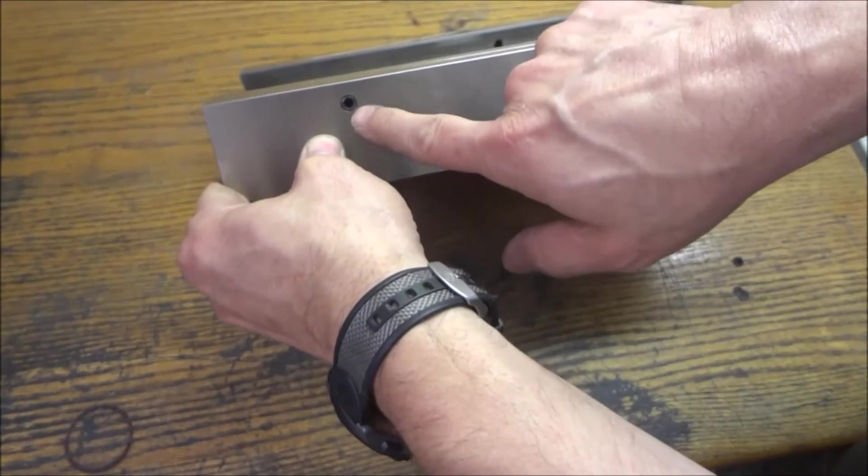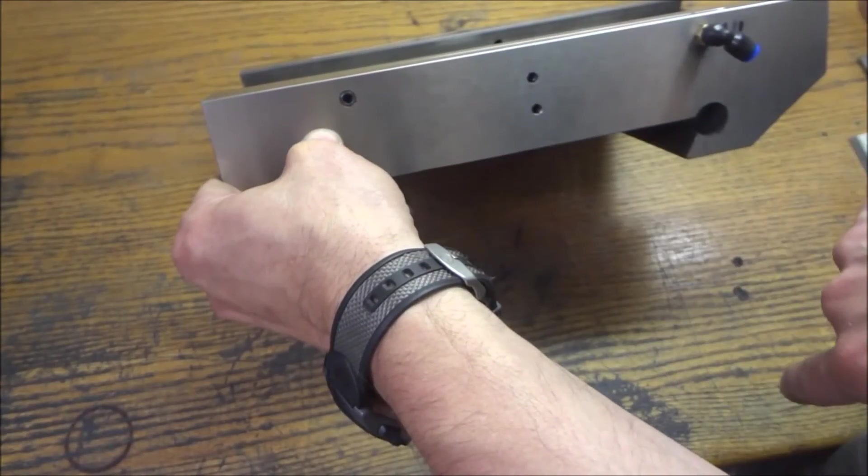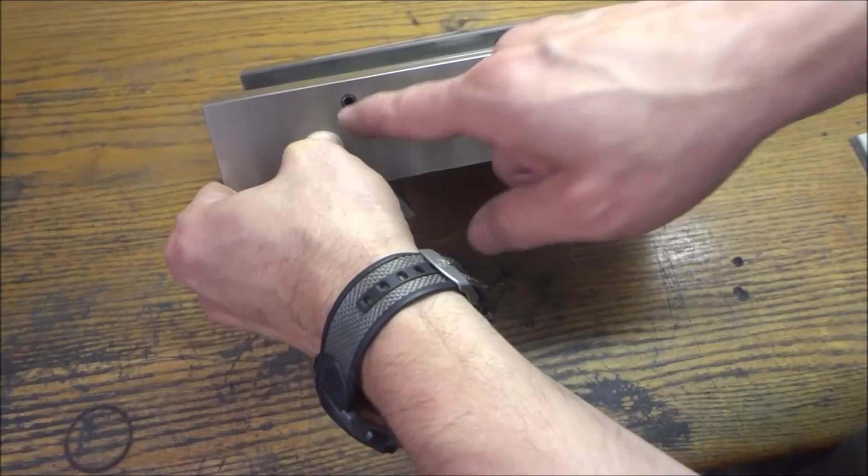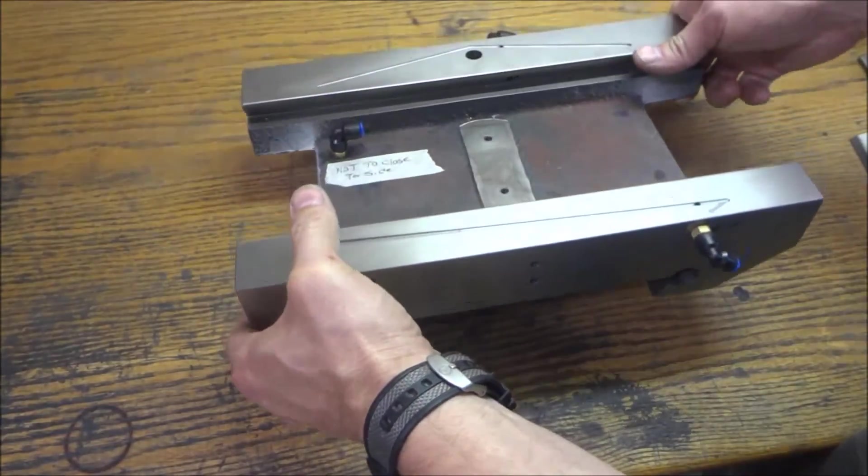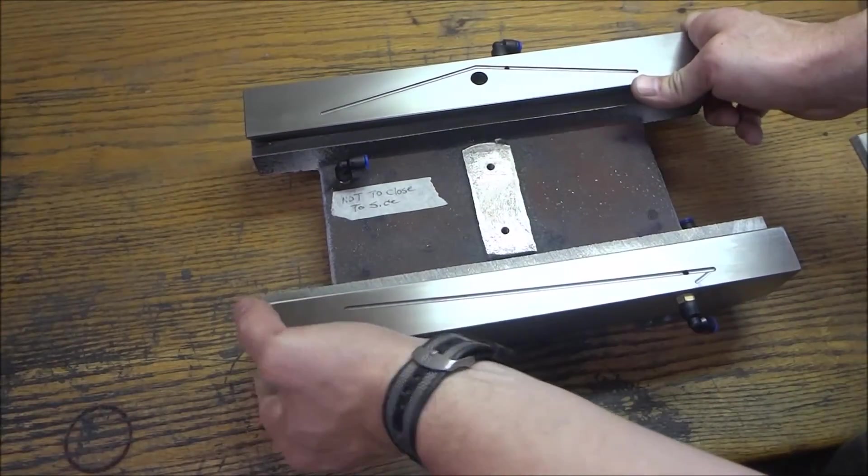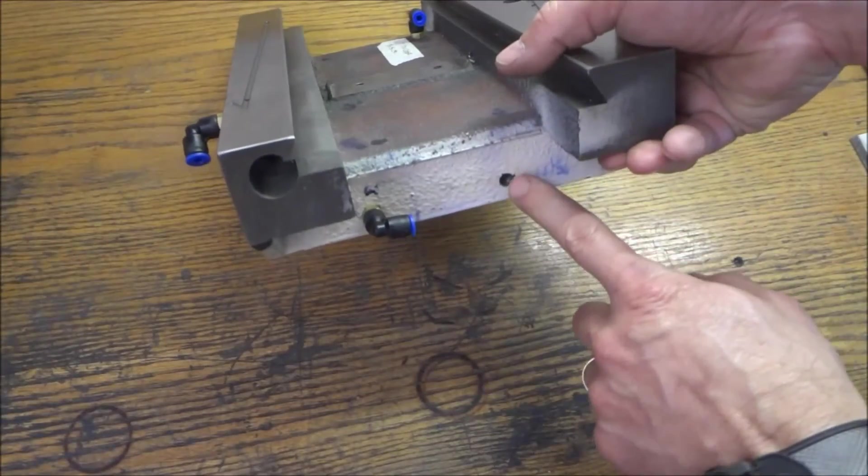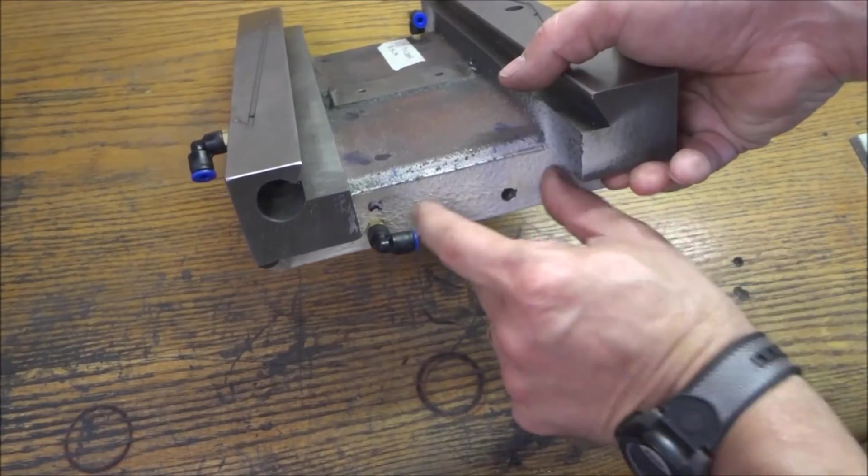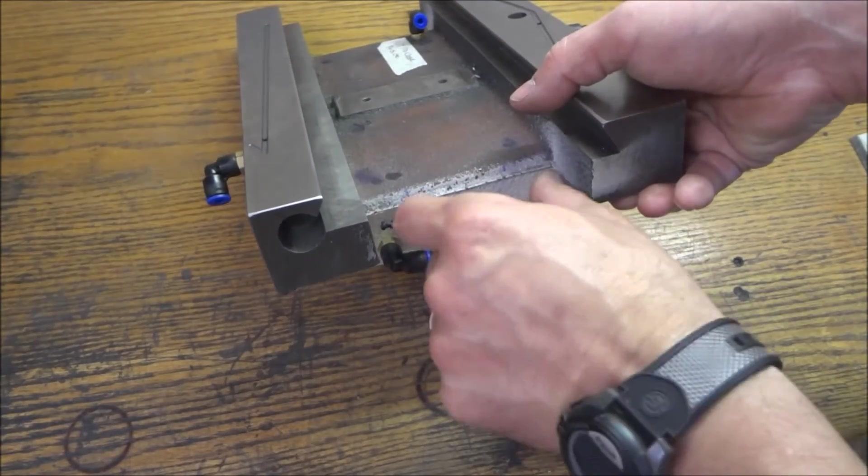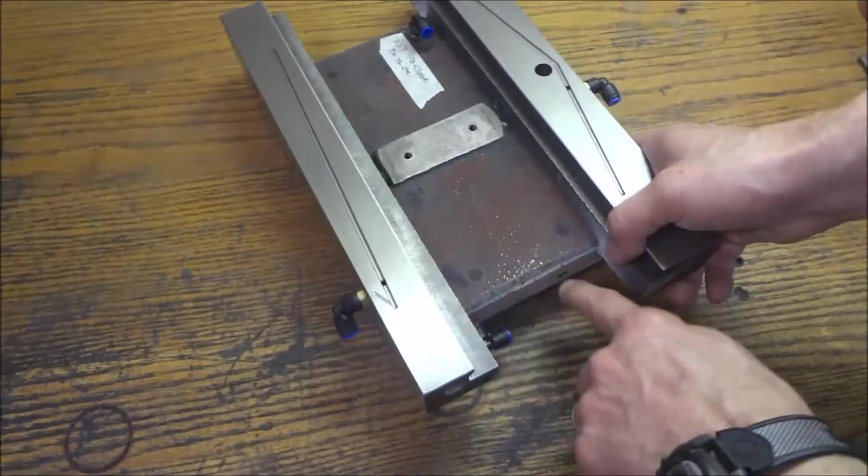I put set screws in all these holes that I'm not using. I may use them to bolt something up later, but if so I can just take those out - they're just set screws with a little Loctite. This one right here I'm going to try to use to mount my manifold with some bracketry, so I left that one out.